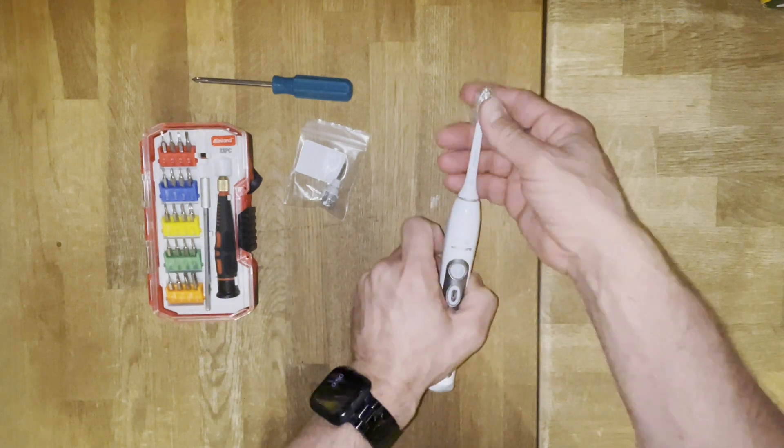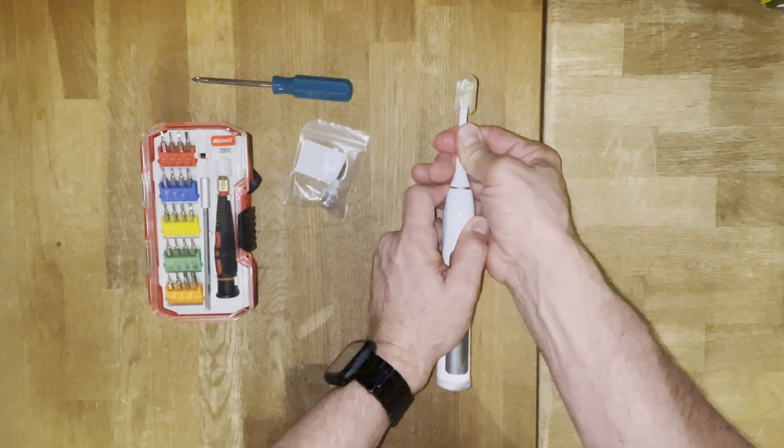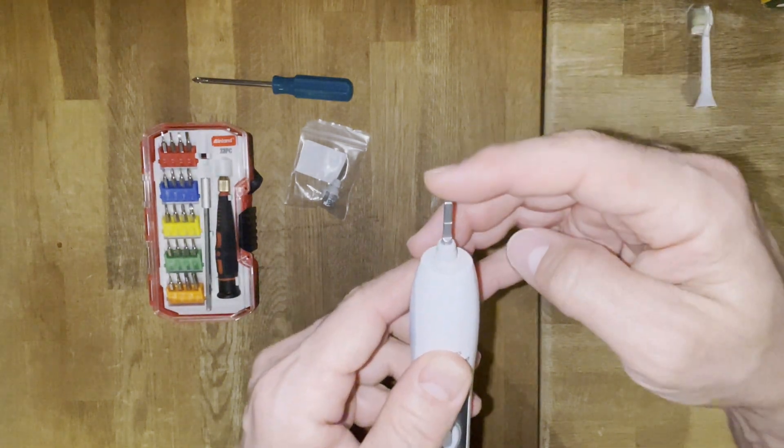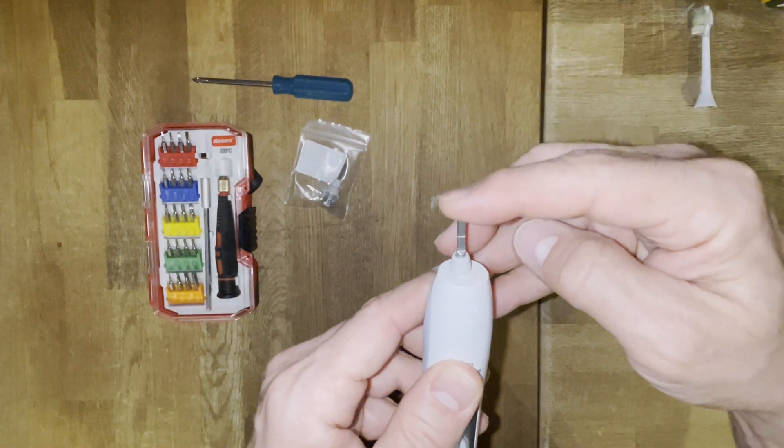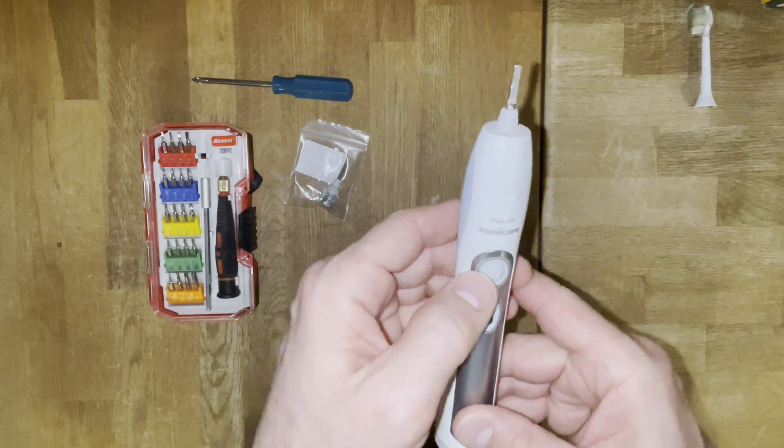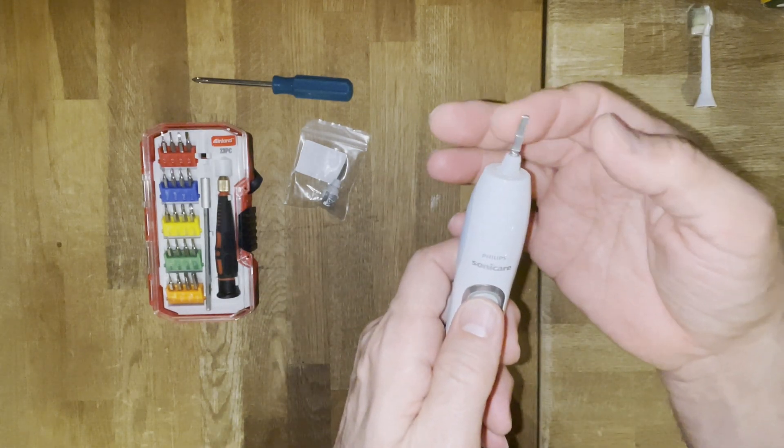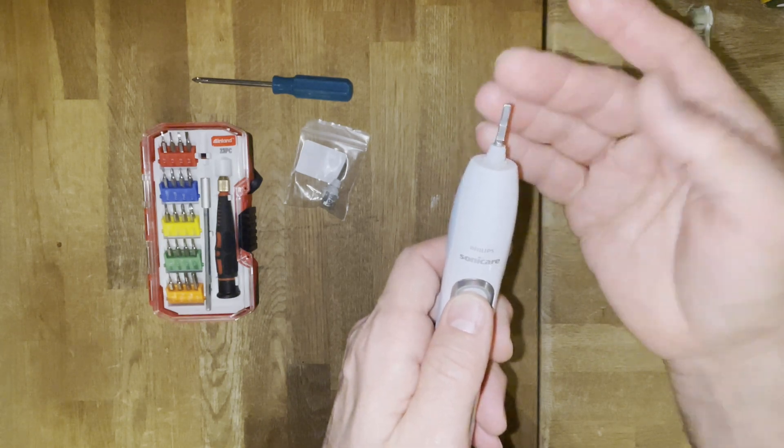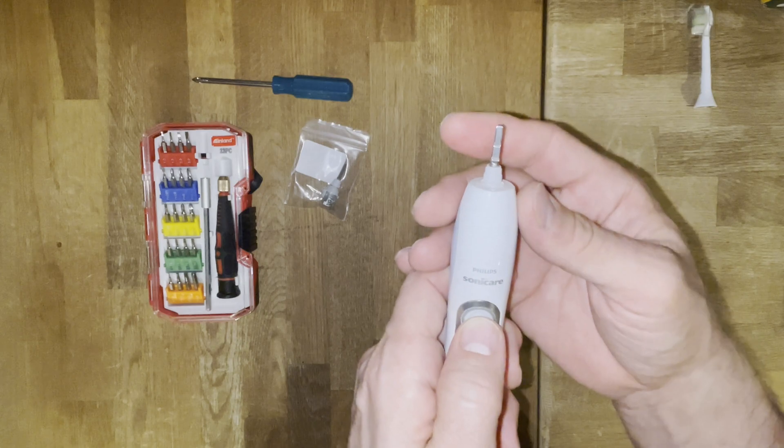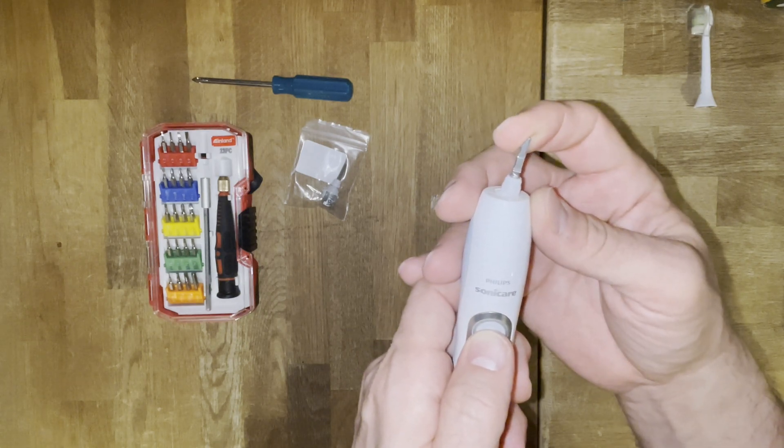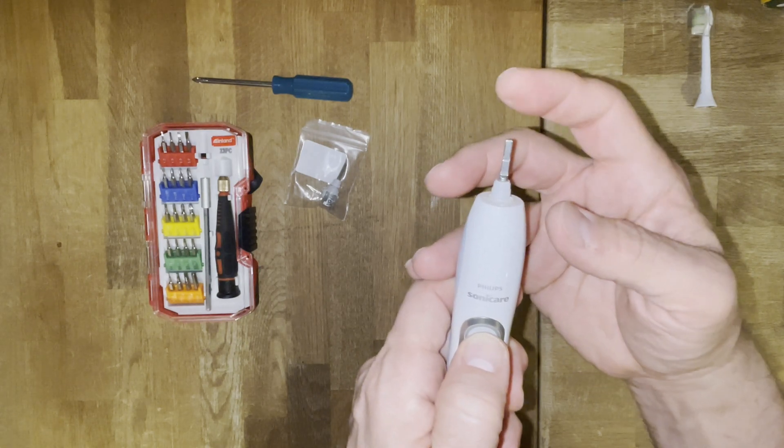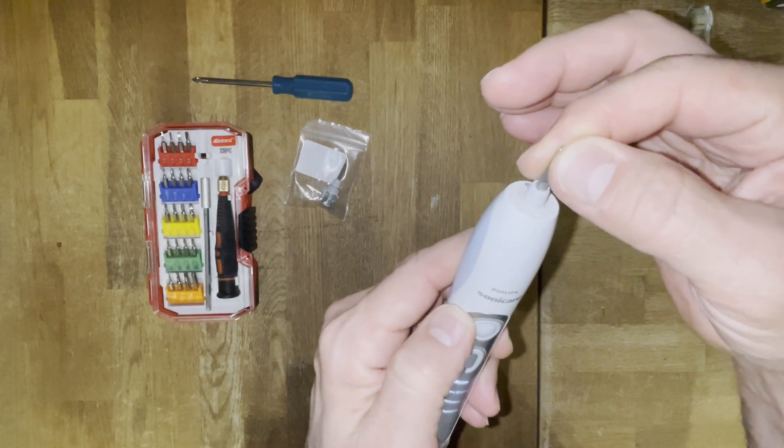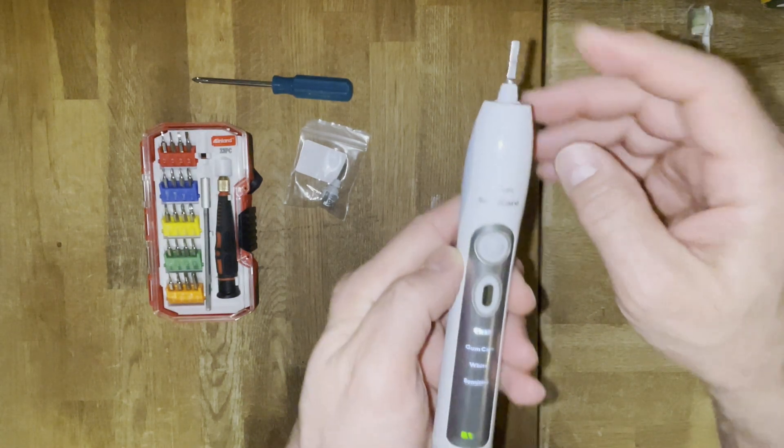So the first thing we'll do is we'll try to pop out the head, and as you can see this, it's not supposed to be this way. Once we turn it on, you'll notice that this vibrates too much. It's supposed to vibrate very lightly, and you don't see it. But this one is definitely broken. It's not supposed to make that loud noise, and it's not supposed to be this loose. So we definitely know this needs to be replaced.